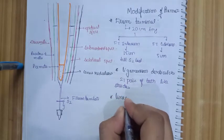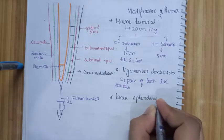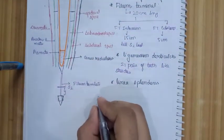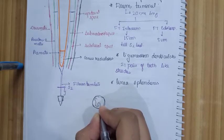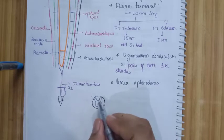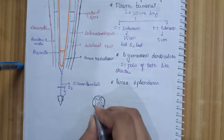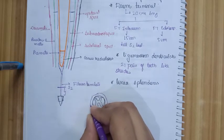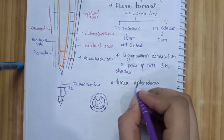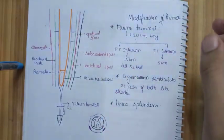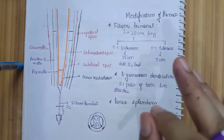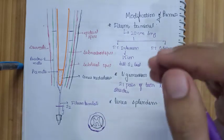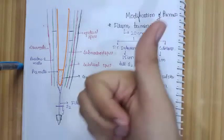The ligamentum denticulatum consists of 21 pairs of lateral tooth-like projections that project into the arachnoid and dura mater to keep the spinal cord in place. The last modification is the linea splendens. Looking at the cross-section of the spinal cord, with the gray matter centrally and white matter surrounding it, at the anterior lateral sulcus the meninges thickens — this thickening is called the linea splendens. It is a thickening of the meningeal covering at the anterior lateral median sulcus. If you like the video, please hit the like button and subscribe.